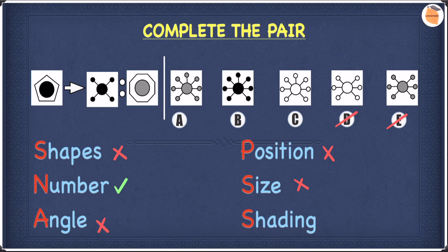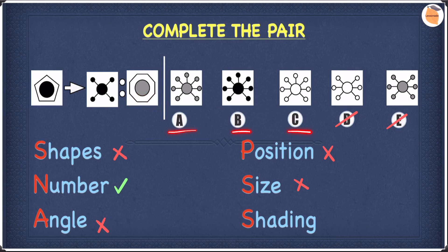In terms of shading, the shading pattern is basically what is in the middle. Here we have a pentagon with a black circle in the middle, so the shading pattern is black. Over here we have a gray circle in the middle, which means the shading pattern for the answer must be gray. Out of A, B, and C, which one is gray? It's obviously A. So let's cross off B and C — the answer for this question is A. I hope you guys understood everything.